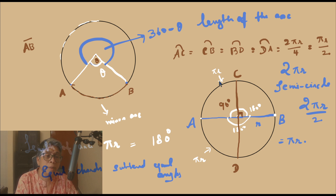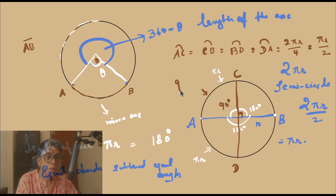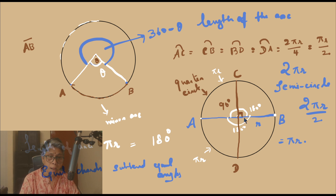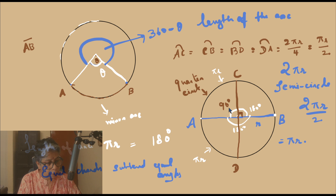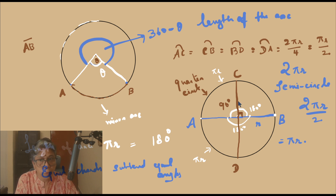The angle subtended by what I call a quarter circle — that was a semicircle at πr — this is a quarter circle. The angle subtended by a quarter circle at the centre is equal to 90 degrees. I hope you followed. Thank you.